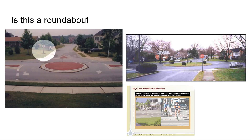You can see neighborhood traffic circles in San Luis Obispo — I think it's Chorro Street coming into downtown, and Patricia Drive near Highland and Foothill Boulevard. Those are pretty recently installed. They're becoming popular, but they're not roundabouts — they have their uses, but they're not roundabouts.